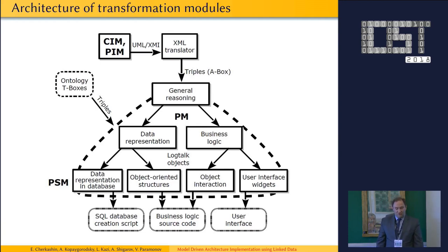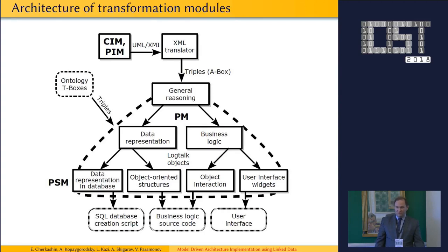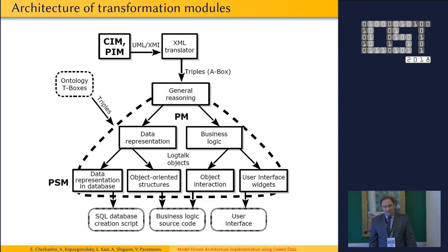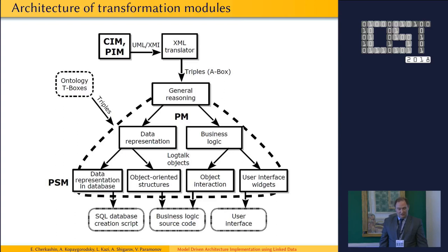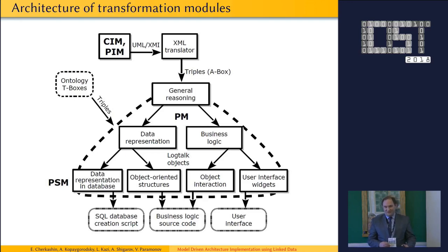The architecture of transforming models is presented on this slide. At the start of the transformation process we should have a description of the computational processes, a model of software presented in UML format, and access to ontologies. At the end of the transformation we will have an SQL database creation script, business logic source code including classes, interfaces, methods and fields of classes, and elements of a user interface — though of course the user interface will be simple, but it is generated.